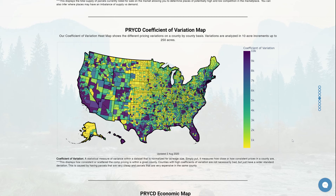Hey everyone, this is Max Edson, co-founder of Priced, and I'm going to be walking you through our coefficient of variation map today.